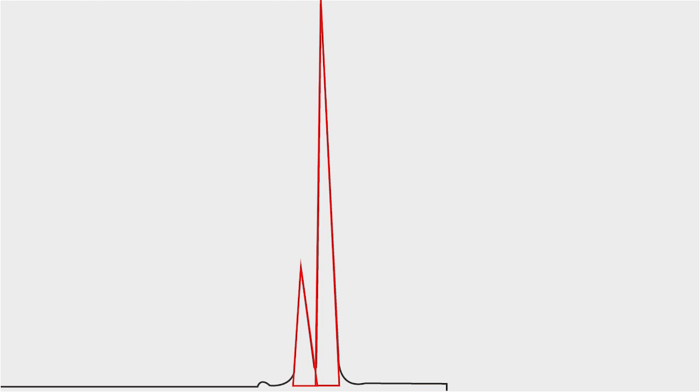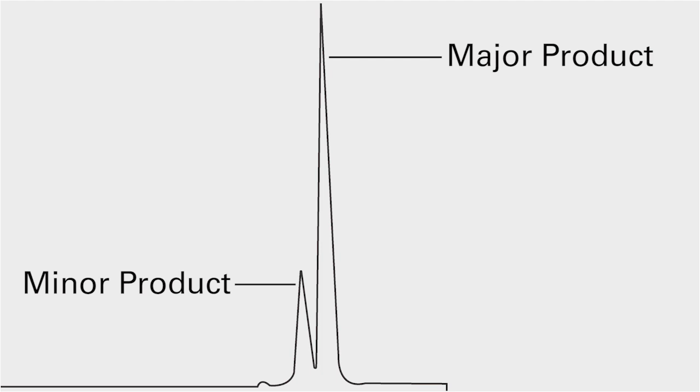In this chromatogram, we have two peaks corresponding to two products. We will use the ratio of the areas to determine the ratio of the two products. The larger peak corresponds to the major product. The smaller peak corresponds to the minor product.